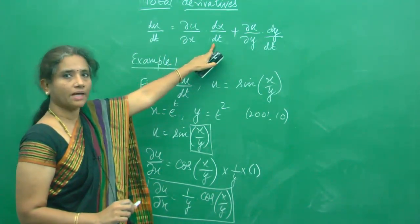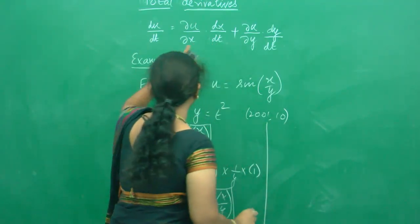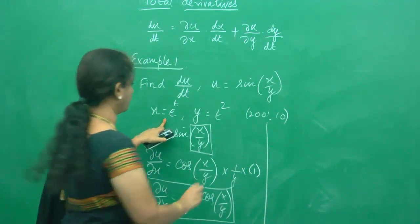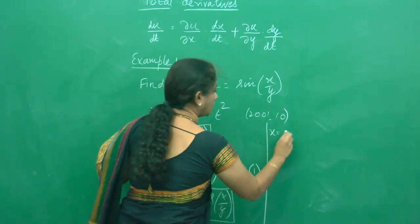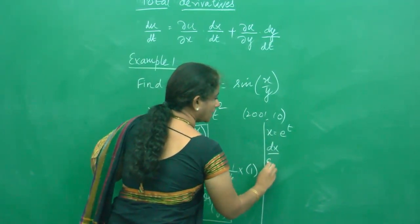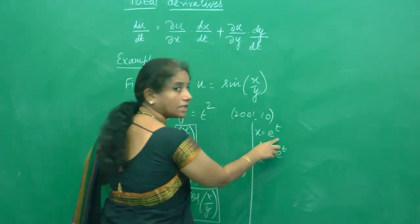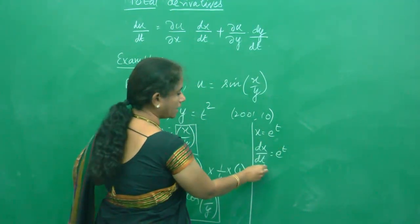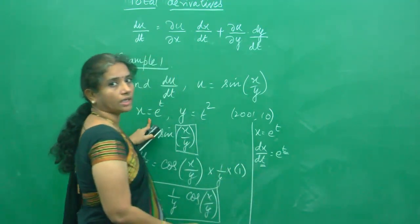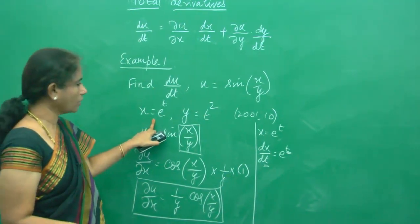Now let us find dx/dt. We know x = e^t, so differentiating with respect to t, the derivative of e^t is e^t, and the derivative of t is 1. Therefore dx/dt = e^t.